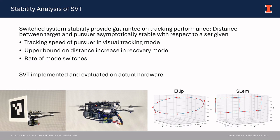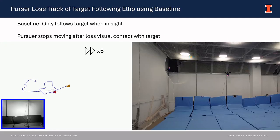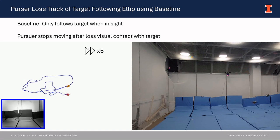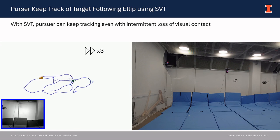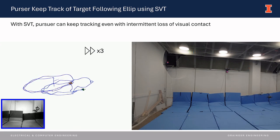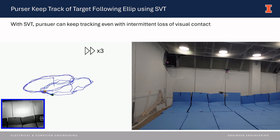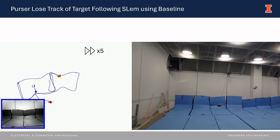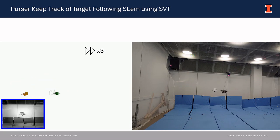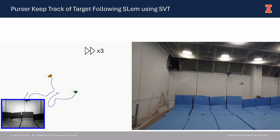We implement SVT on an actual drone platform based on the Agilicious drone and have a target drone follow two different trajectories — ellipse and SLAM — to evaluate its performance. We compare SVT with a baseline that only follows the target when it's in sight. We can see the pursuer stops moving after losing visual contact with the target. But with SVT, the pursuer can keep tracking the target despite intermittent vision loss. A similar trend is observed for the more complicated target trajectory SLAM, where the baseline loses track instantly, but with SVT the pursuer can still manage to keep track of the target.